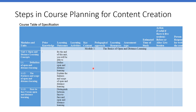This is a table of specification divided into columns and rows. The column headings start with modules and units, which are derived from the course competencies. You also have prior knowledge — knowledge required to attain the current knowledge. For example, if the learning outcome is to teach learners about latitude and longitude, the prior knowledge in mathematics might be how to factorize.